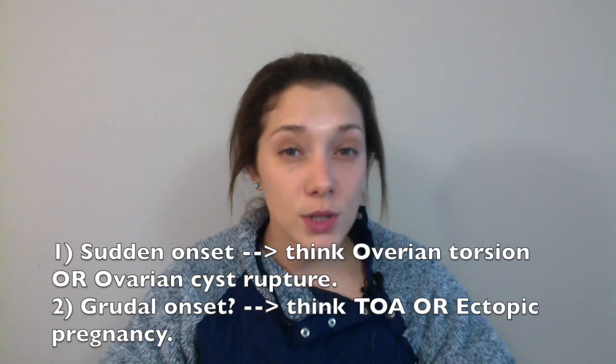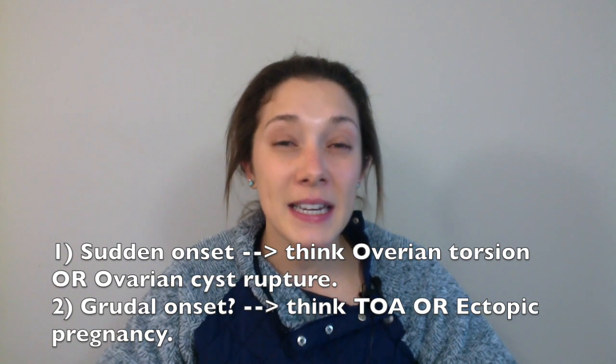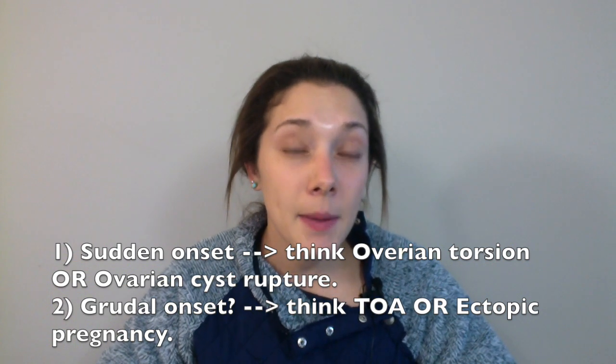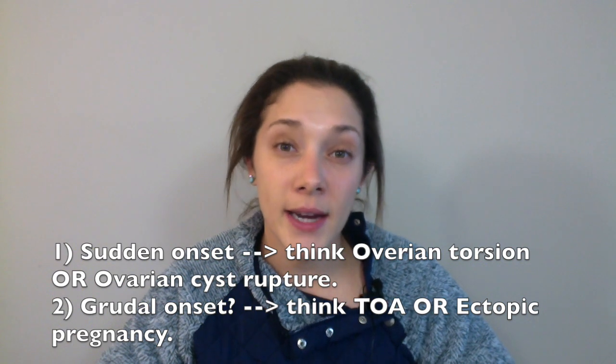The next two ovarian pathologies — ectopic pregnancy and tubo-ovarian abscess — don't have a sudden onset but more of an insidious onset of pain. I'll consider ectopic pregnancy if the patient's last menstrual period was over a month ago, they have a positive pregnancy test, or there is vaginal bleeding on exam. I'll consider a tubo-ovarian abscess when a patient has a history of fevers, body aches, chills, any discharge, or associated pelvic pain.